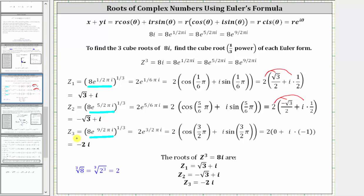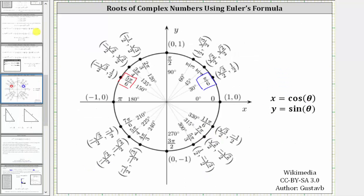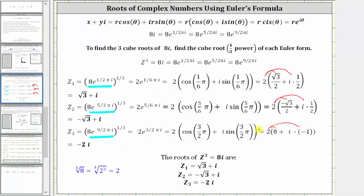Finally, for z₃, the only difference is the exponent on e. Multiplying the exponent by 1/3, we get 9π/6·i, which simplifies to 3π/2·i. Converting to polar form, we need sine and cosine for 3π/2 radians, which is a quadrantal angle. The cosine value is 0 and the sine value is −1. Distributing 2, our third complex solution is −2i.